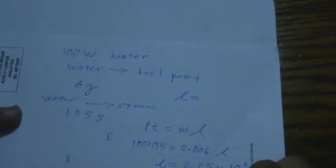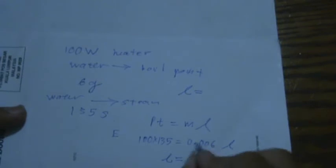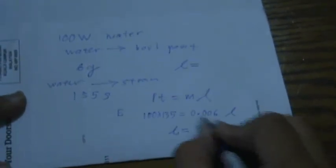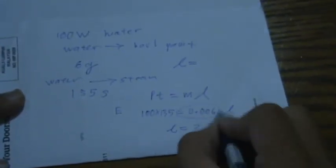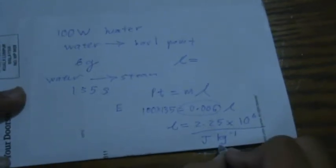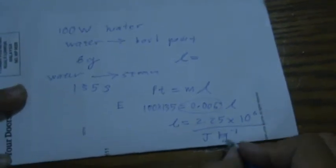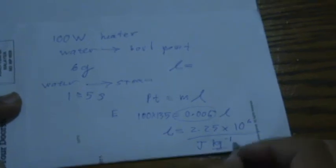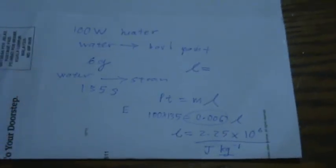And the unit is Joule per kg. One thing to remember is always remember to change your 6 gram to 0.006 kg, because the final answer from the multiple choice is actually Joule per kg, not Joule per gram, unless it's Joule per gram, you can use gram.